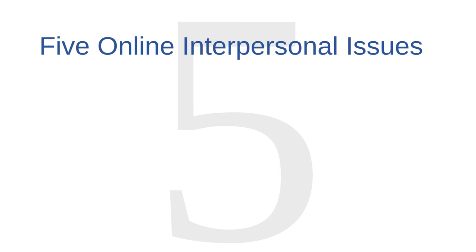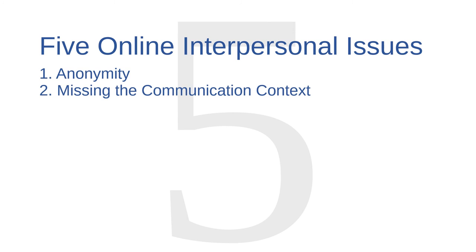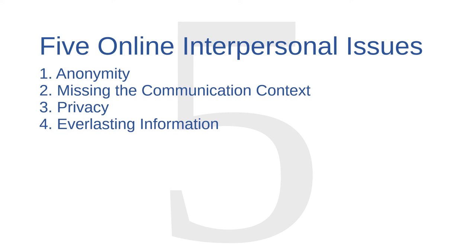Okay, that's all I have for you on interpersonal issues. We've introduced five broad topics: anonymity, missing the communication context, privacy, everlasting information, and credibility. Clearly, there are more issues than those we've discussed here — we have merely scratched the surface. Try to think of some other issues that come from online interactions. How can the lessons that you've learned in this class help you to deal with them? If you think about it for a while, I'm sure that you can come up with a number of other issues and potential hazards, and I'm sure that you could develop many thoughtful ways to handle them. You are, after all, on your way to becoming an expert in cybersecurity.